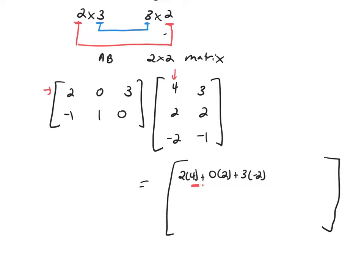So now, let's find the next entry, this entry right here. So you're going to select the first row and now the second column. And you're going to multiply the corresponding entries together. So you'll have 2 times 3, 0 times 2, 3 times negative 1.